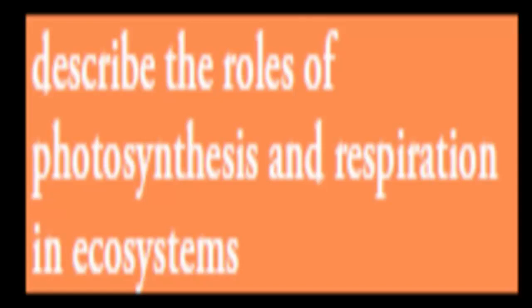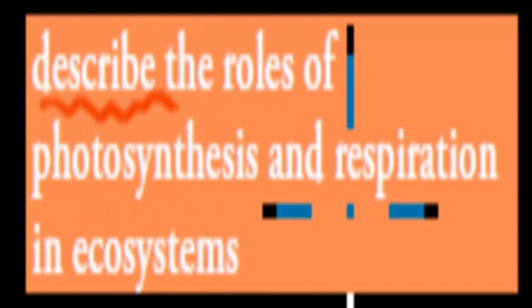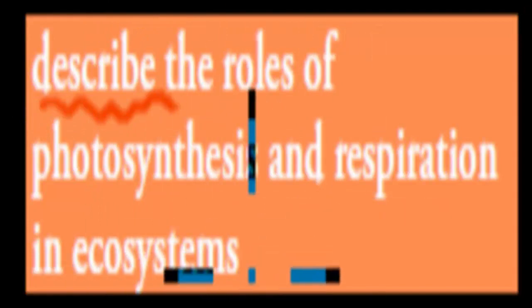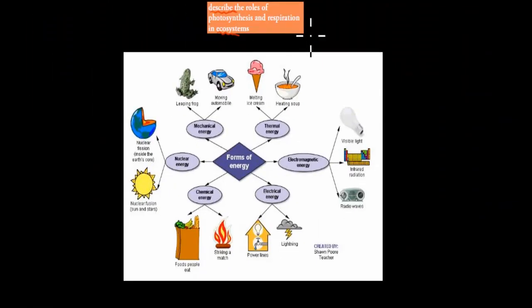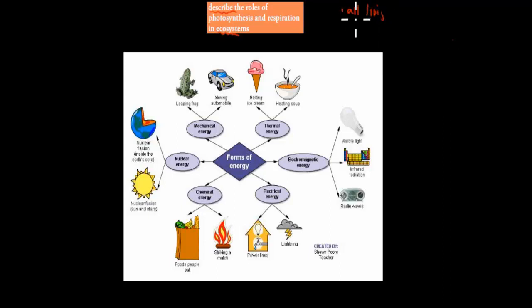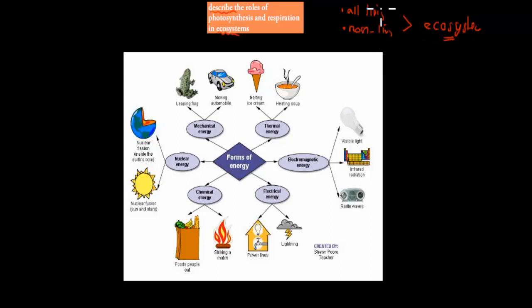Welcome back. In the last video we talked about some of the uses of energy. In this video we're going to cover the next dot point, which says describe the role of photosynthesis and respiration in ecosystems. An ecosystem is just any area — for example, Sydney — and all living and non-living things in that area make up our ecosystem, including abiotic and biotic factors.